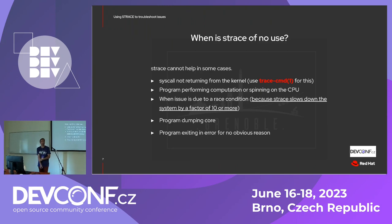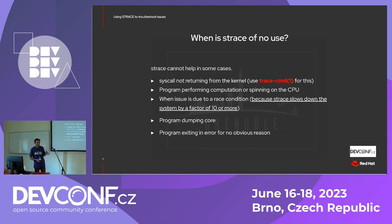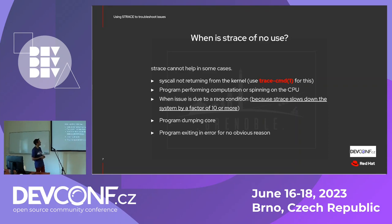Strace is of no use if there is no syscall at all. So if your program is just spinning on the CPU, there is no syscall involved and it won't be of any use. If a syscall is not returning from the kernel — so hanging in the kernel — it won't help much. It will just tell you that this syscall with this file descriptor or file is being called and you hang forever in the kernel. In such a case, you have kernel tools such as trace-cmd that can help.